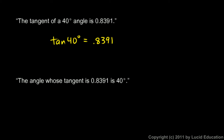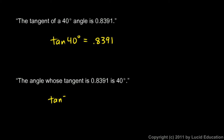Now we can also invert that statement. Instead of saying the tangent of a 40 degree angle is .8391, we could say the angle whose tangent is .8391 is 40 degrees. We have a mathematical notation for that too — we write tangent inverse, that's a negative one in the superscript position: inverse tangent of .8391 equals 40 degrees. We read that out loud as the inverse tangent of .8391 is 40 degrees.